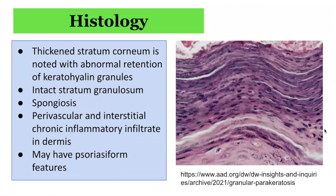In terms of histology, the characteristic feature is an unusual form of parakeratosis. The stratum corneum is thickened and compacted with increased eosinophilic staining. There are retained nuclei present throughout the keratin layer, creating the parakeratosis. The most unusual feature is the visible retention of basophilic keratohyalin granules within these areas of parakeratosis. Other features include spongiosis, perivascular and interstitial chronic inflammatory infiltrate in the dermis, and some biopsies may also show psoriasiform features.